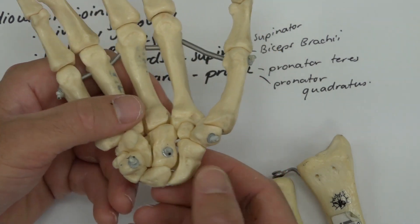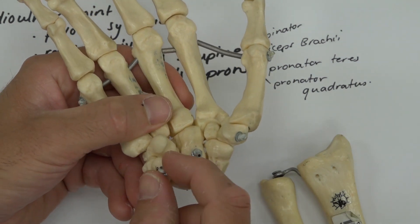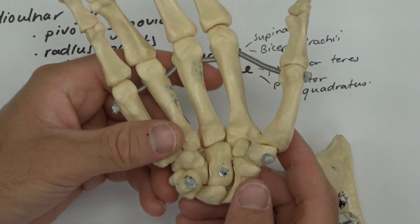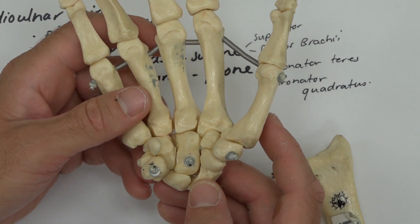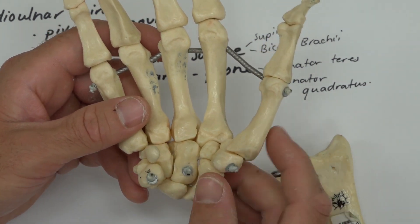In the proximal row of bones you have the scaphoid, the lunate, the triquetrum, and the pisiform. Interestingly, the pisiform is actually a sesamoid type bone, just like your patella, so it's embedded within a tendon—one of the flexor tendons of your wrist.